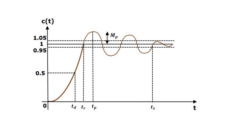This is the response of a system to unit step input. Here you can see delay time, rise time, peak time, settling time, and peak overshoot. The peak overshoot is the amplitude parameter and the others are time parameters.